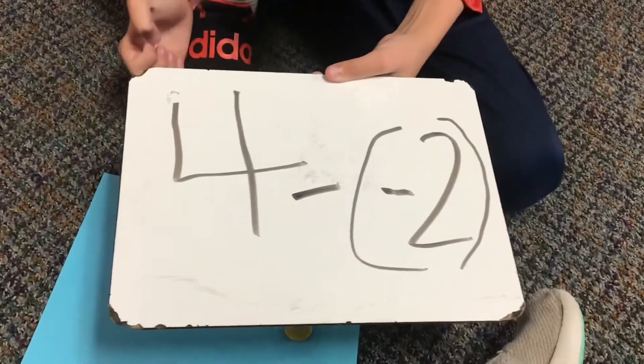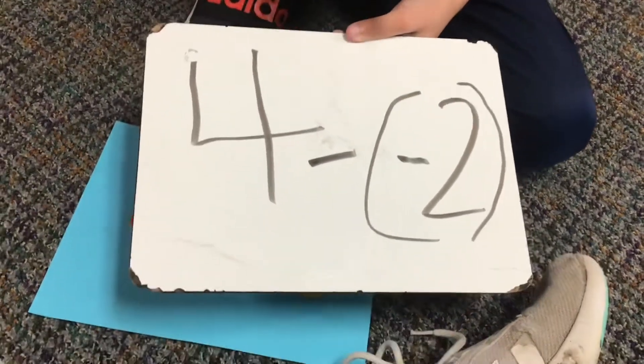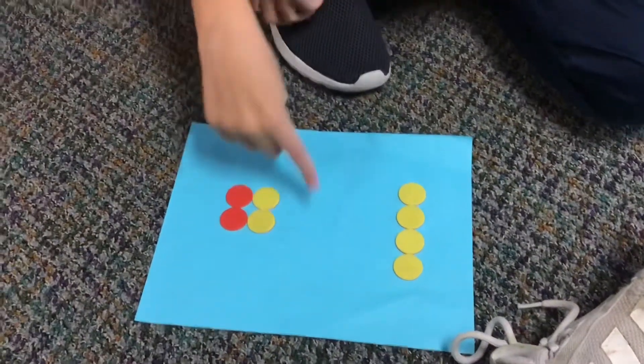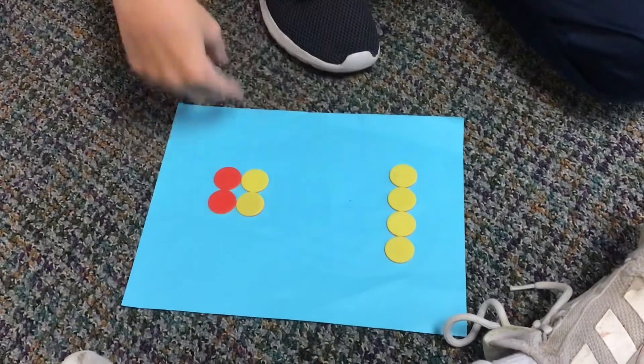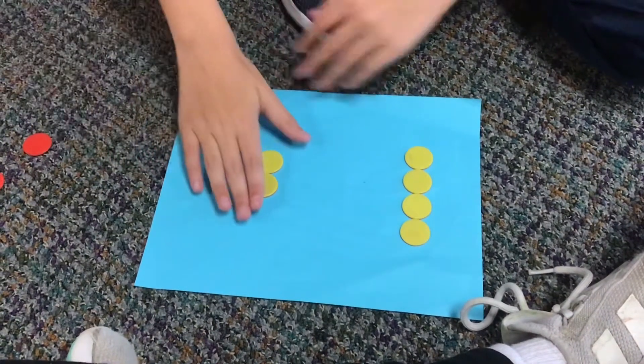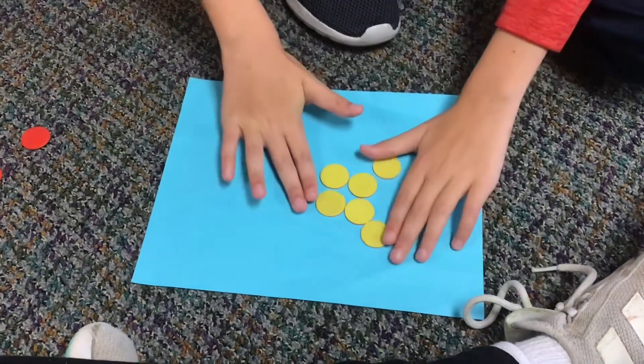For our next problem we have positive 4 minus negative 2. So we have a pair of zero right here, and then we have our positive 4. We take away the negative 2, and that leaves us with positive 6.